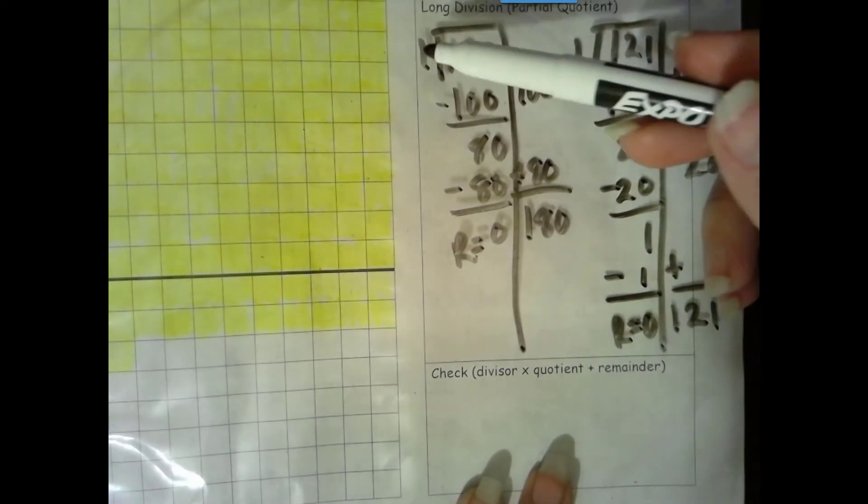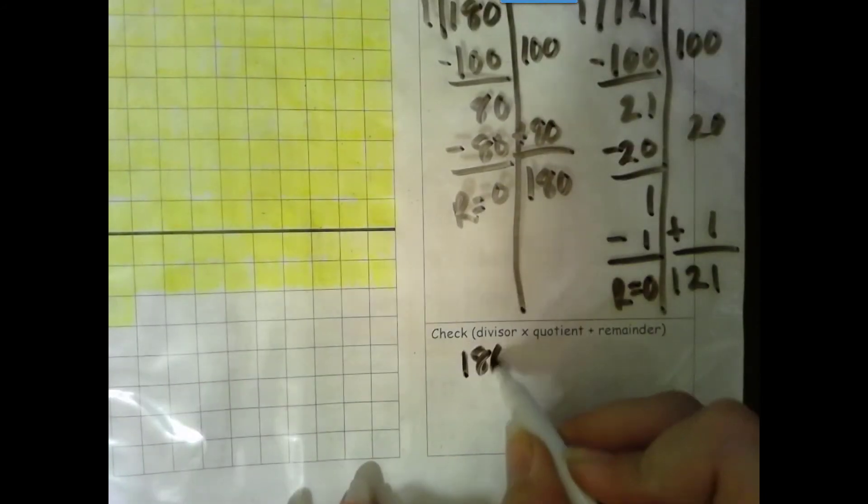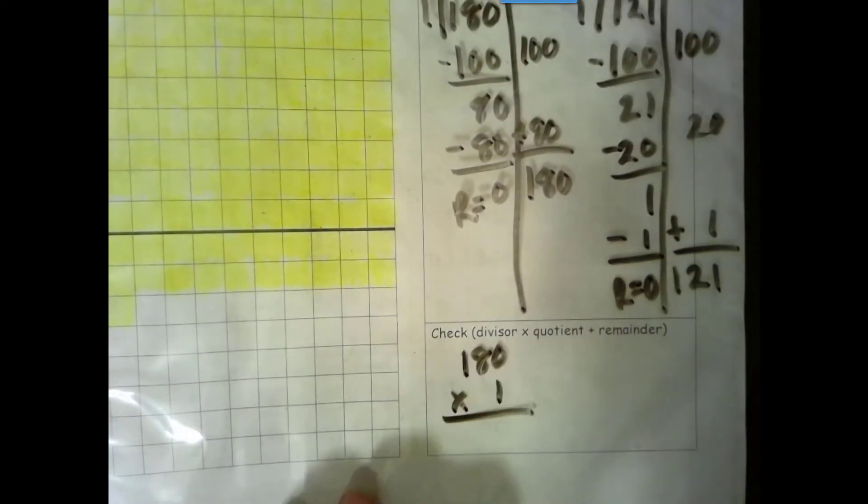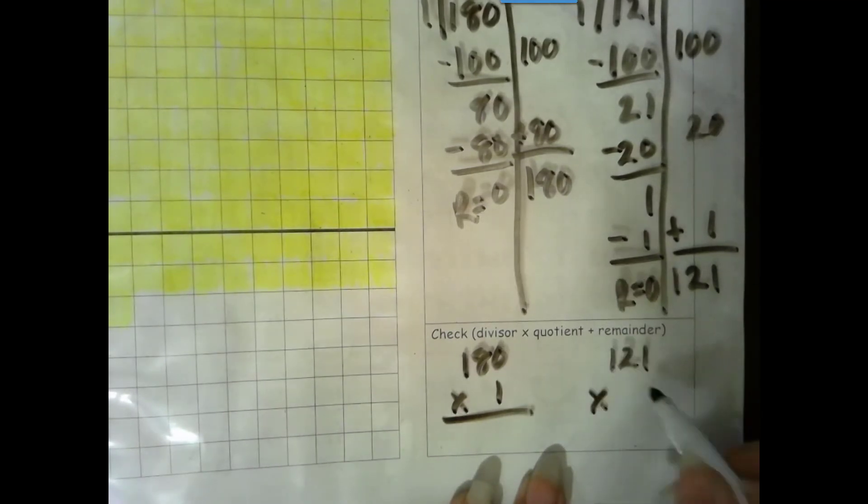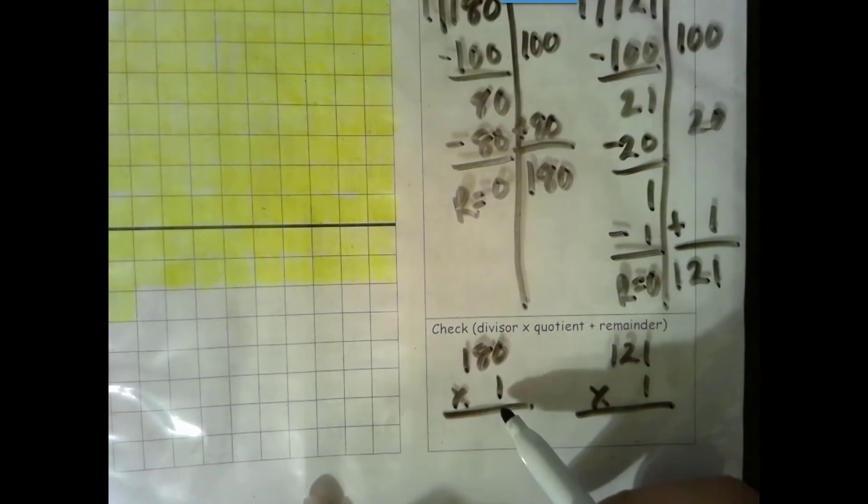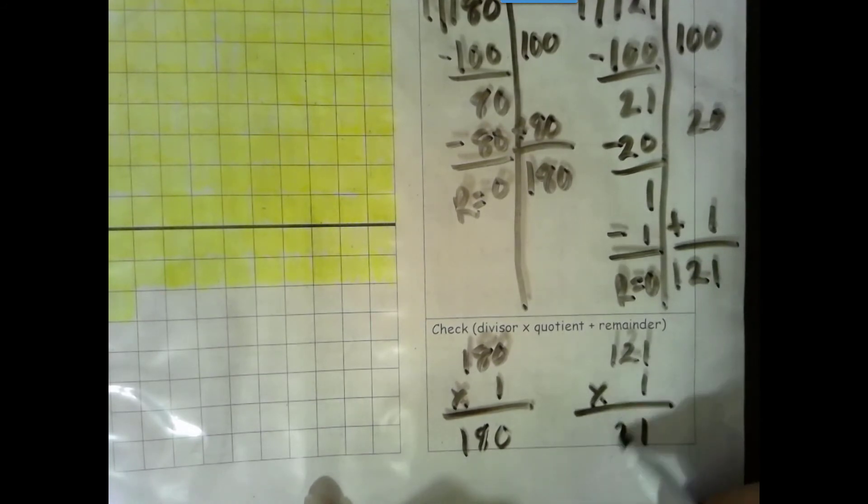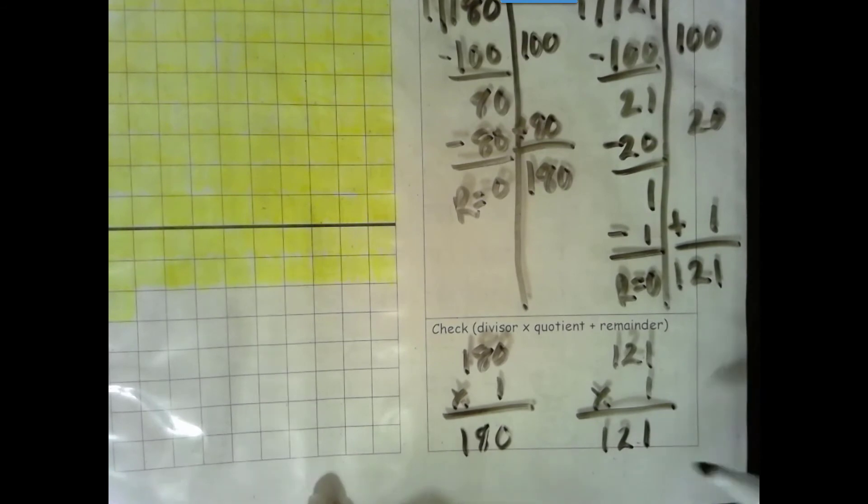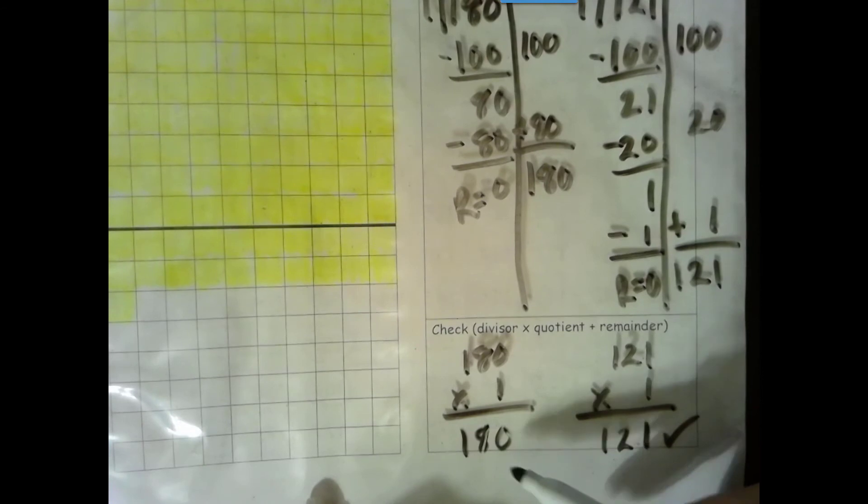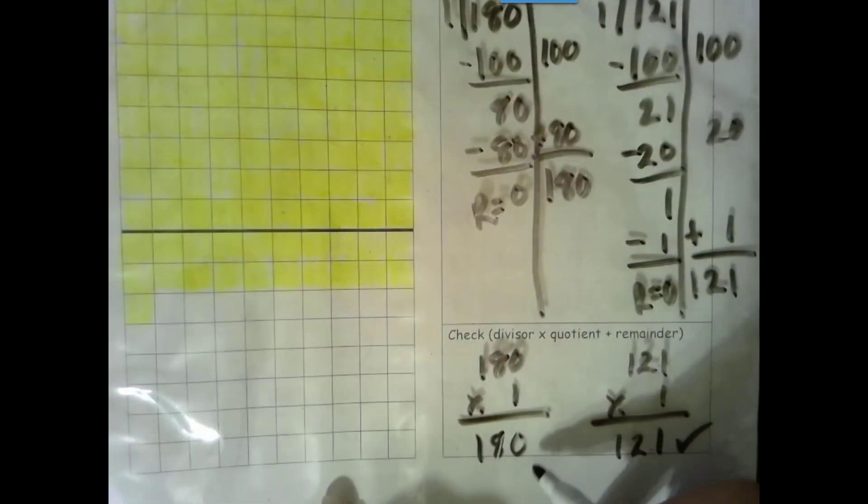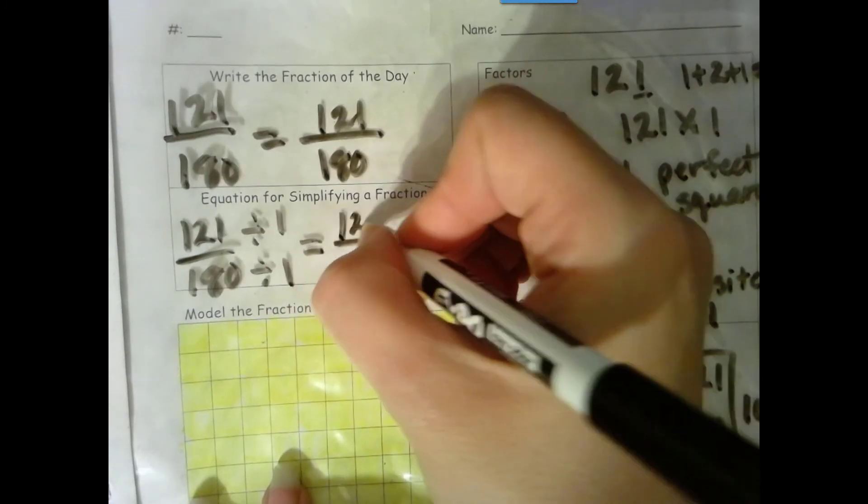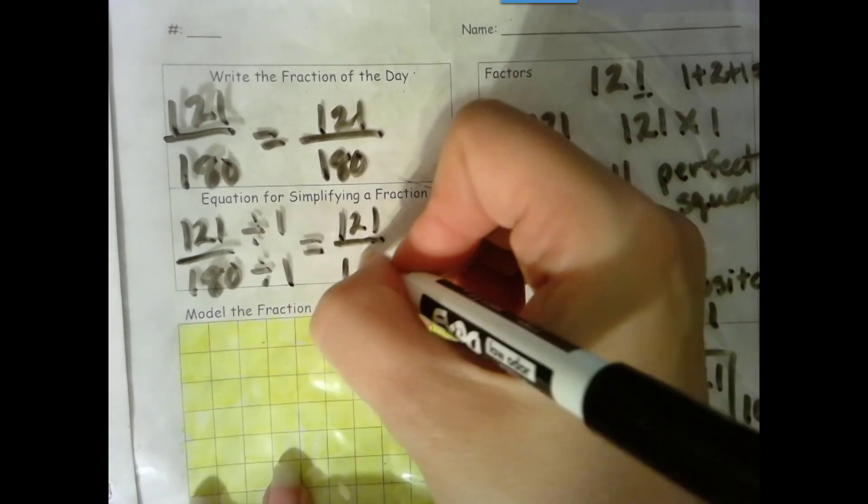Let's go ahead and check. Divisor times quotient plus remainder. Since our remainder is 0 for both, and our identity property of addition says when you add 0, it stays the same, we don't need to take time to actually add the 0. One group of 0 is 0. One group of 8 tens is 8 tens. One group of 100 is 100. One group of 1 is 1. One group of 2 tens is 2 tens. One group of 100 is 100. 121, that matches our dividend. Check. 180, that matches our dividend. Check. So our numerator is definitely 121, and our denominator is definitely 180.